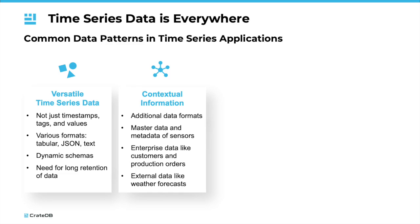This contextual information is mainly metadata and master data of sensors or assets, enterprise data about customers or production orders, as well as external data such as weather forecasts. In typical applications, there is about 90% time series data and 10% contextual information.